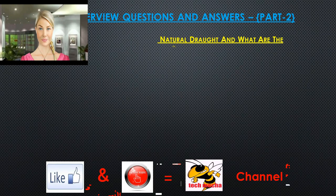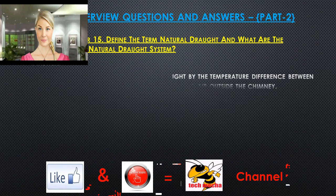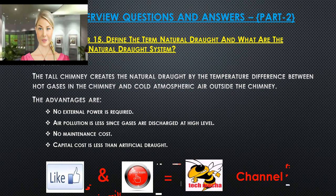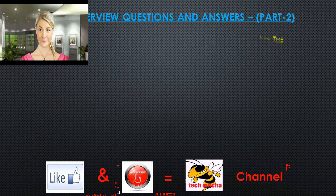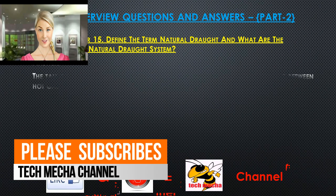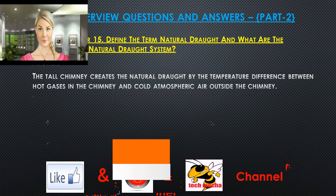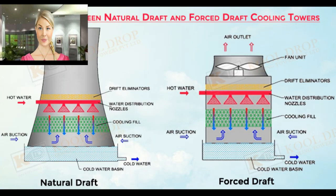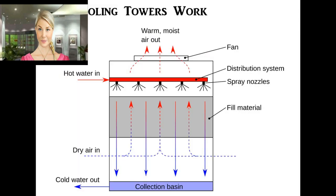Question 15: Define the term natural draft and what are the advantages of the natural draft system? The tall chimney creates natural draft by the temperature difference between hot gases in the chimney and cold atmospheric air outside the chimney. Advantages: no external power is required, air pollution is less since gases are discharged at a high level, no maintenance cost, and capital cost is less than artificial draft.